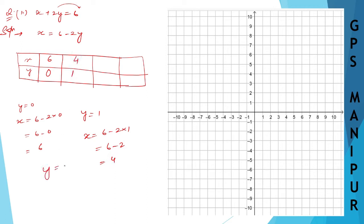When y equals 2, x will equal 6 minus 2 times 2. 6 minus 4 is 2. So when y equals 2, x is 2.